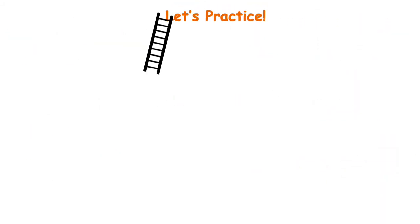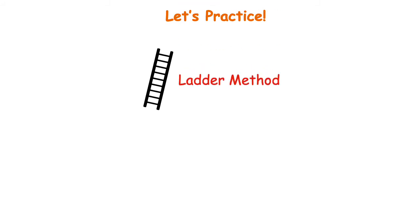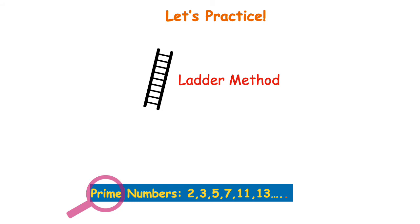Now we're going to practice finding the prime factors of a number using something called the ladder method. It's called the ladder method because it works like a ladder — you start with the composite number at the top and work your way down to the bottom where you're done. One important thing to remember is those prime numbers; I'll list them here — I stopped at 13 but there are more beyond that.